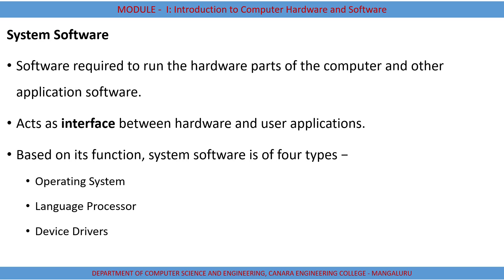System software is software that is required to run the hardware parts of the computer and other application software. It is the base for a computer to run or to start. The different types of system software are operating system, language processors, and device drivers.